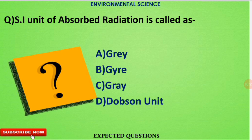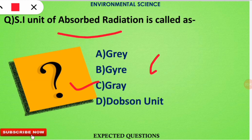The first question is: the SI unit of absorbed radiation is called as what? Absorbed radiation is seen in the case of fusion and fission reactions. The correct option is option C — Gray. The SI unit of absorbed radiation is Gray, whose short form is Gy.